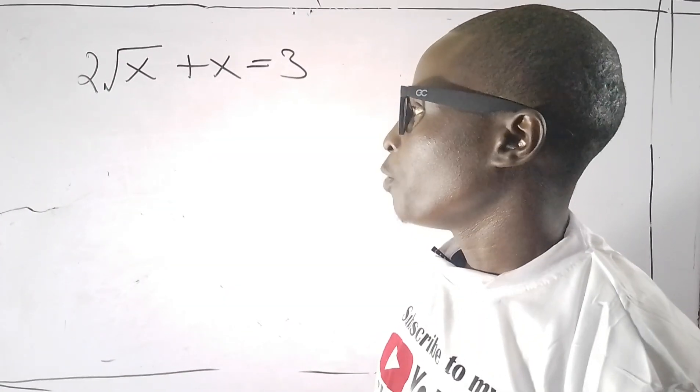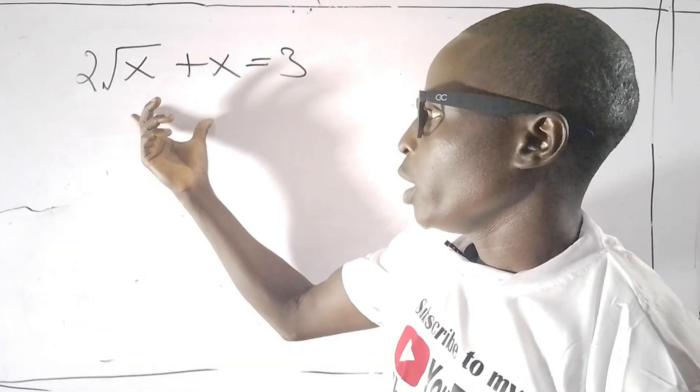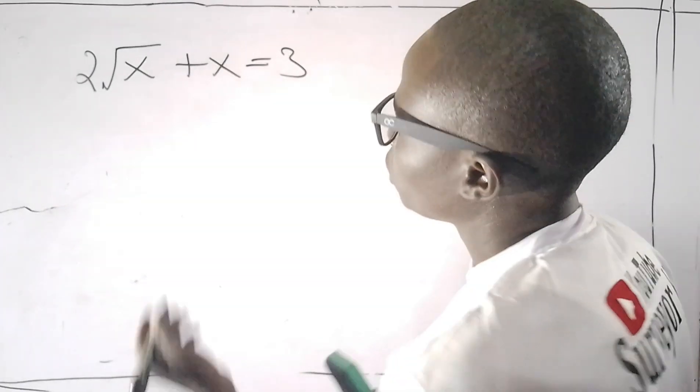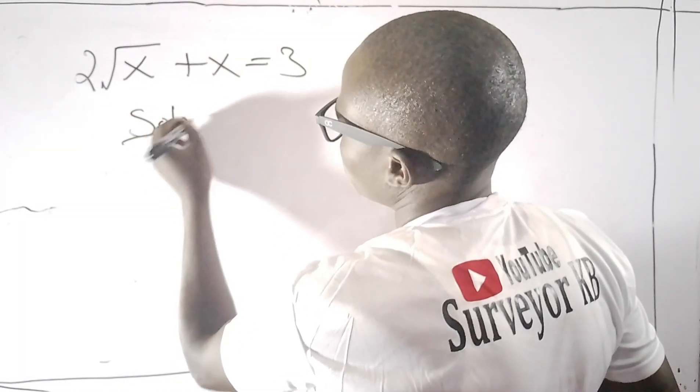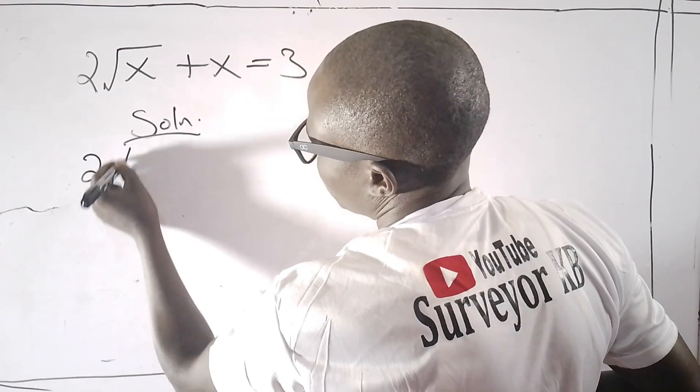Hello viewers, let's carefully find a solution to x in this equation. We have an equation that says 2√x + x = 3.